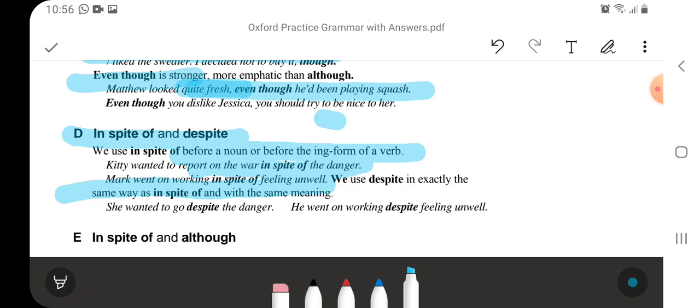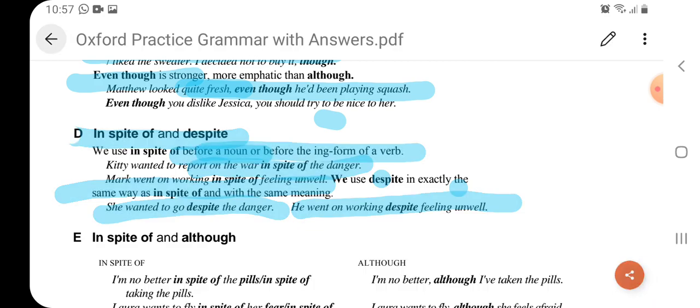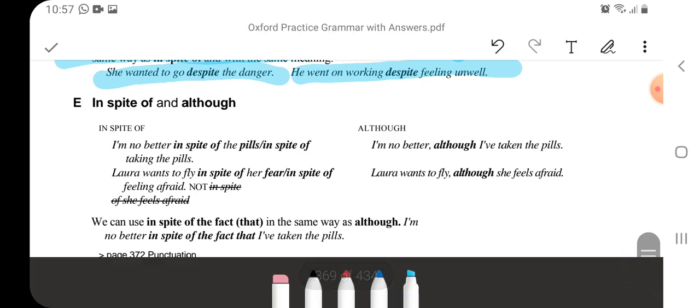Despite is also used in the same way as we use in spite. Let's again revise it. We use in spite of before a noun and before -ing words. Like if I give you an example, in spite of sleeping late last night, I got up early in the morning. Another example would be I went on that trip in spite of danger of the forest. You will also make a few sentences of your own, then you will understand when you will practice it. She wanted to go despite the danger. He went on working despite feeling unwell. So the meaning and the function of in spite and despite is the same.